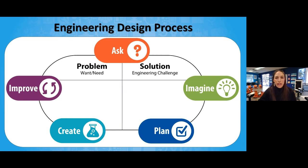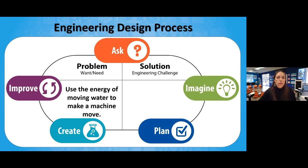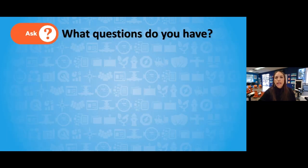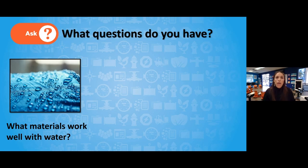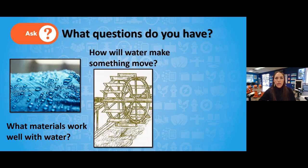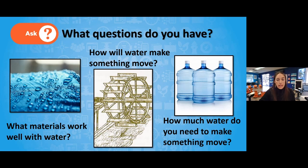We're ready to get into more information about our engineering design process. Today we want to see how we can use the power of moving water to make a machine move, so we're going to be building a prototype of a water wheel. Here are some wonderings I had: I wondered what type of materials would be needed since water wheels involve water — paper would just get soaked, so we need materials that are waterproof or water resistant. I also wondered how will water make something move, and how much water do you need to make something move — is it a drop, is it a gallon?